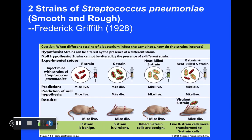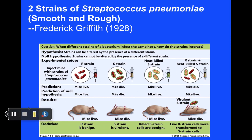Just a few examples of classic experiments addressing this basic question will be shown on the next few slides. First of all, this is some work done by Griffith in 1928. He was working with mice and also a bacterium known as Streptococcus pneumoniae, or simply Strep pneumoniae. Recognize up front that there are two strains of Strep pneumoniae.